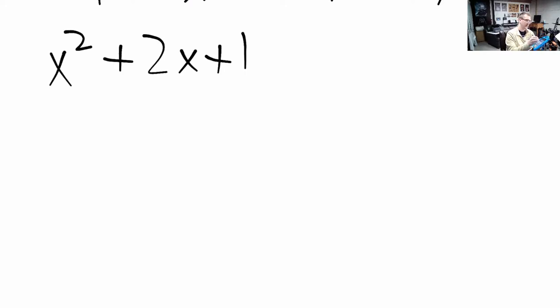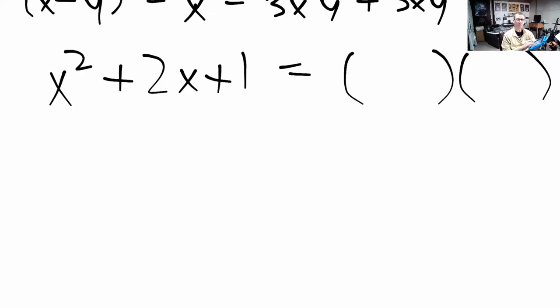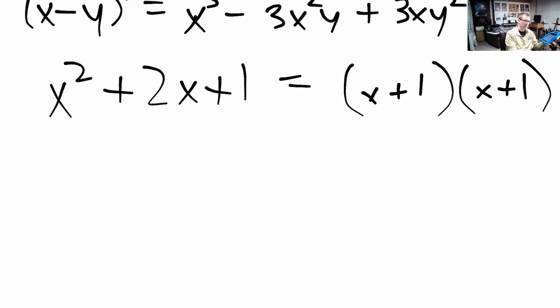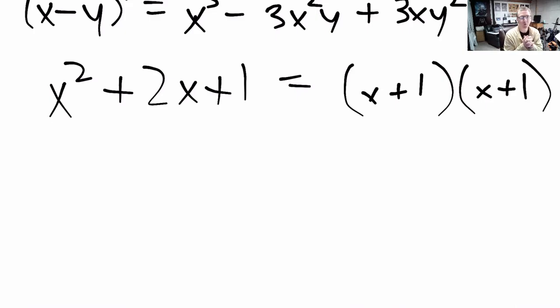Having these special patterns memorized helps you when you're asked to factor a polynomial - for example, taking something like x squared plus 2x plus 1 and writing it as a product of two binomials. You work backwards to figure out the factors. There are lots of example problems you can watch or find, but that's the material for section 1.3. I hope that helps, and I'll talk to you next time for section 1.4.